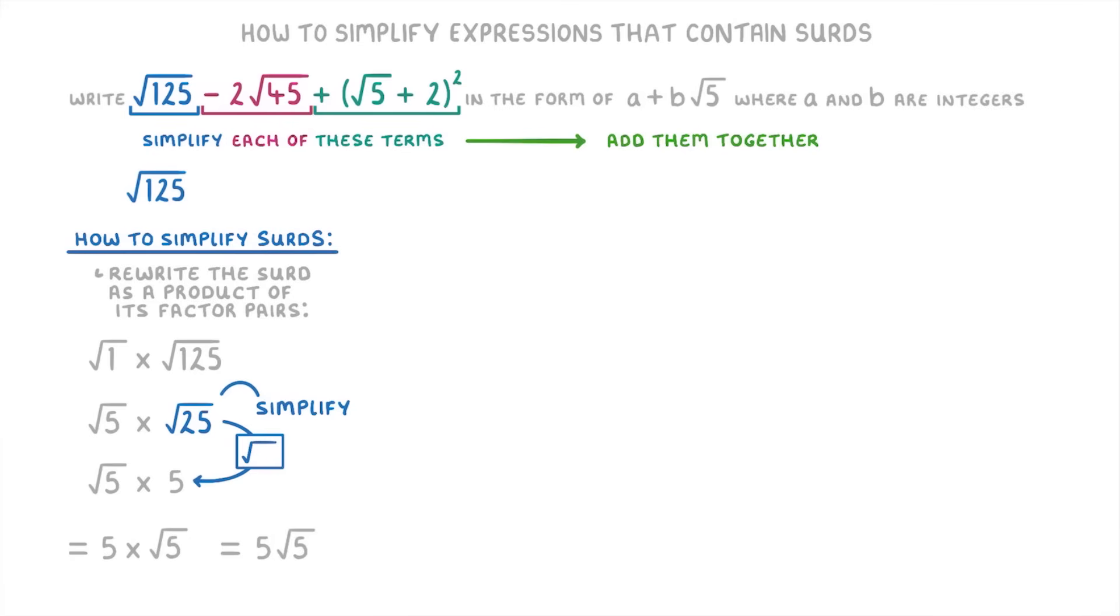Next we have the 2√45, so 2 lots of square root 45. To simplify the √45 part, you can rewrite it as √9 times √5, because this is a factor pair of 45 and 9 is a square number. Then because the square root of 9 is 3, you can simplify it again to 2 times 3 times √5, so 6 times √5, or just 6√5. And remember, it's really a minus 6√5, because we were taking away the 2√45 in the original equation.